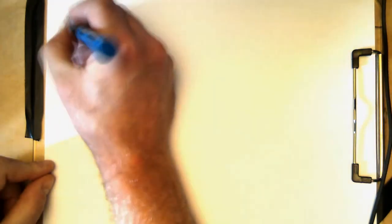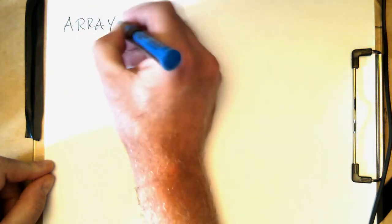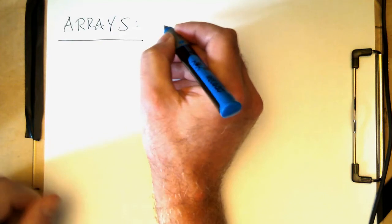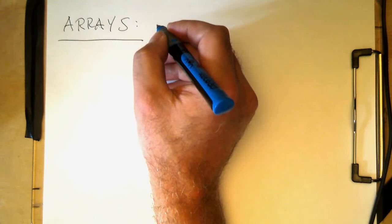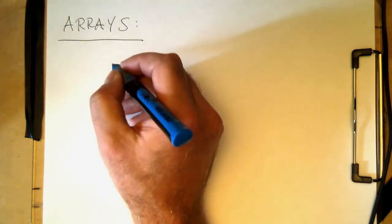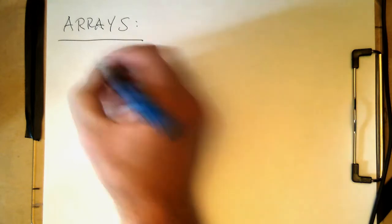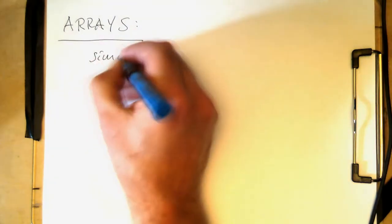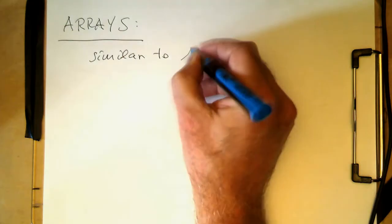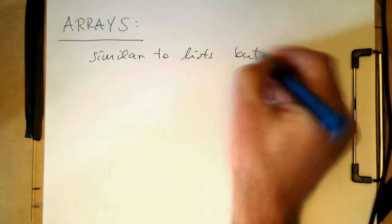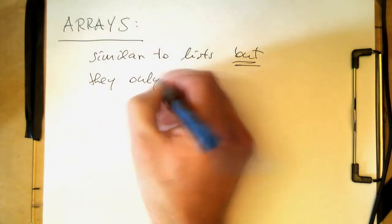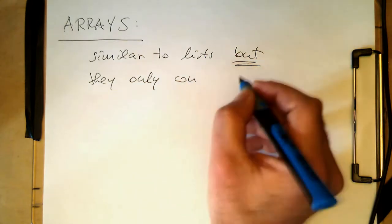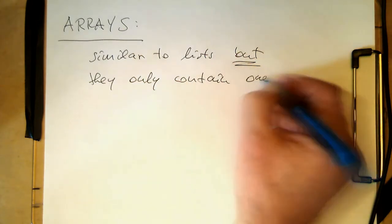Now let's talk about arrays. Arrays are sort of like special lists in the way that they contain only one type. They are just homogeneous in terms of type. Arrays are similar to lists.